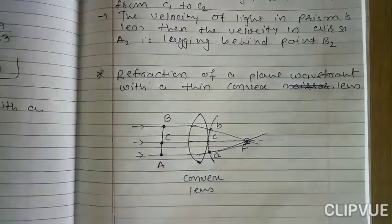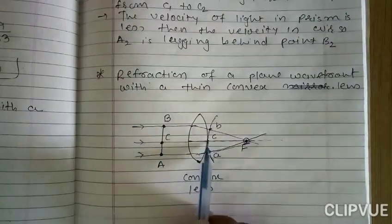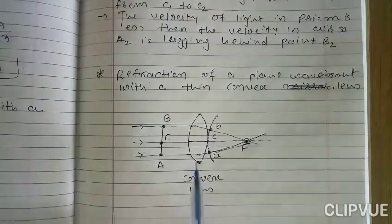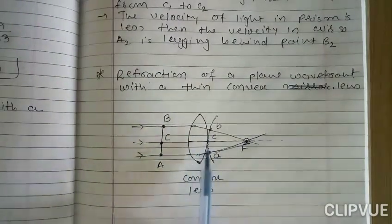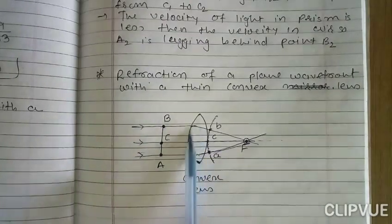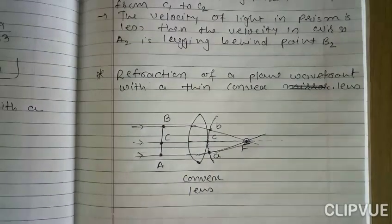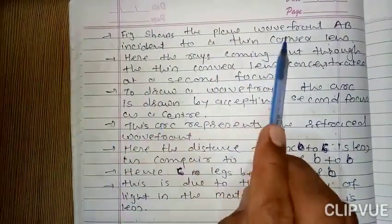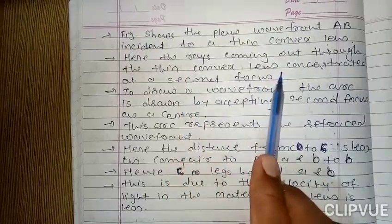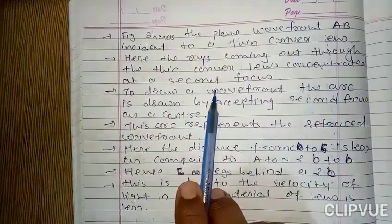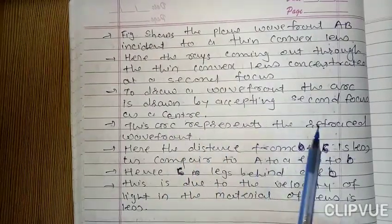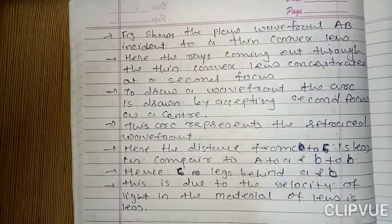As shown in the figure, the distance from C to C is less as compared to B to B and A to A. Point C is lagging behind points A and B. To draw the wavefront, an arc is drawn by taking the second focus as a center. The rays coming out through the thin convex lens concentrate at the second focal point. The arc drawn by accepting the second focus as a center represents the refracted wavefront.